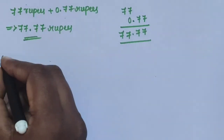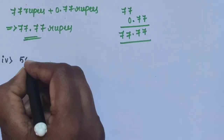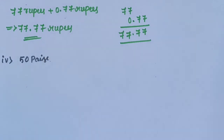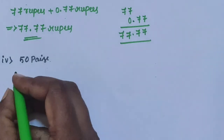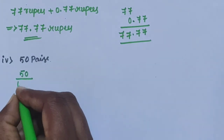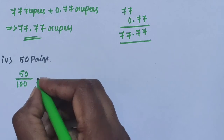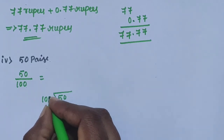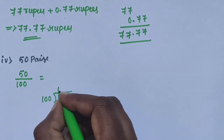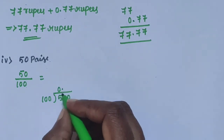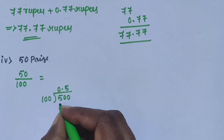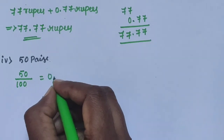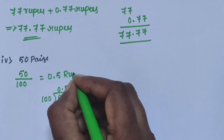Sub-question 4: 50 paise. You already know 1 rupee is equal to 100 paise. Convert 50 paise: 50 divided by 100. Since 50 is smaller than 100, apply the decimal point — the answer is 0.5 rupees.